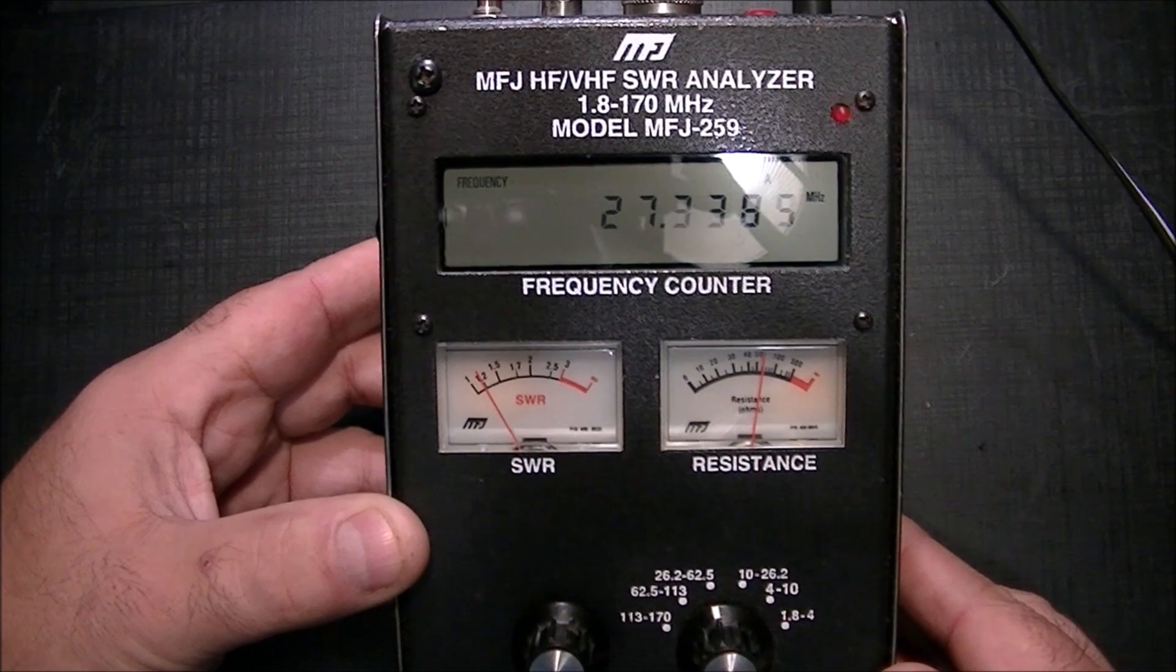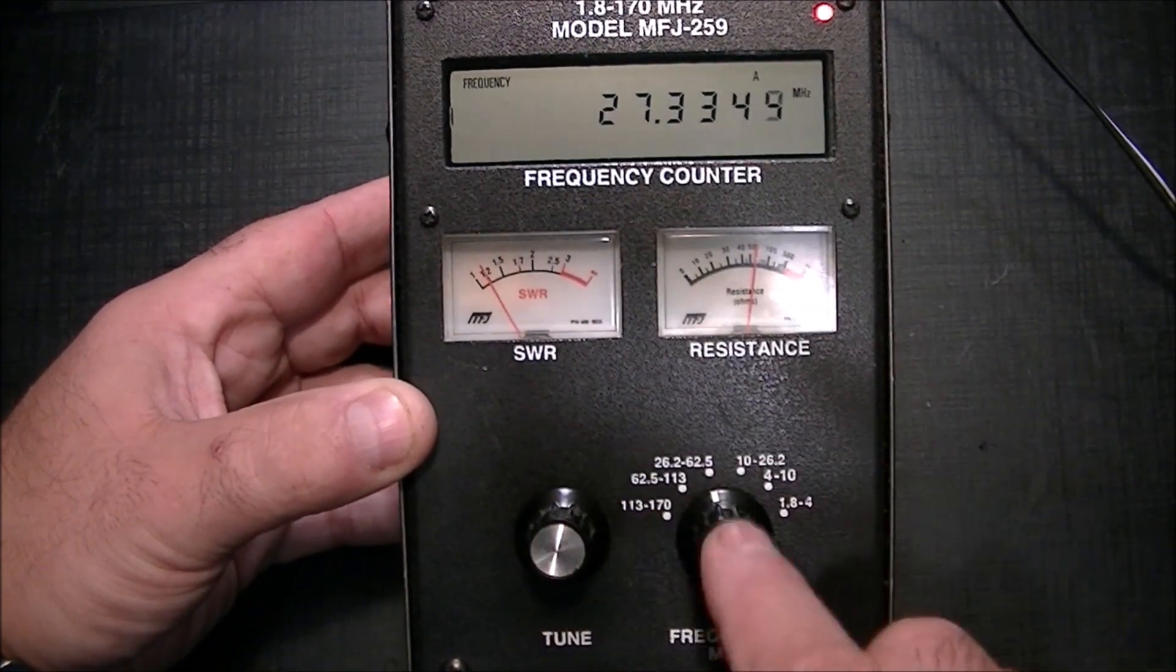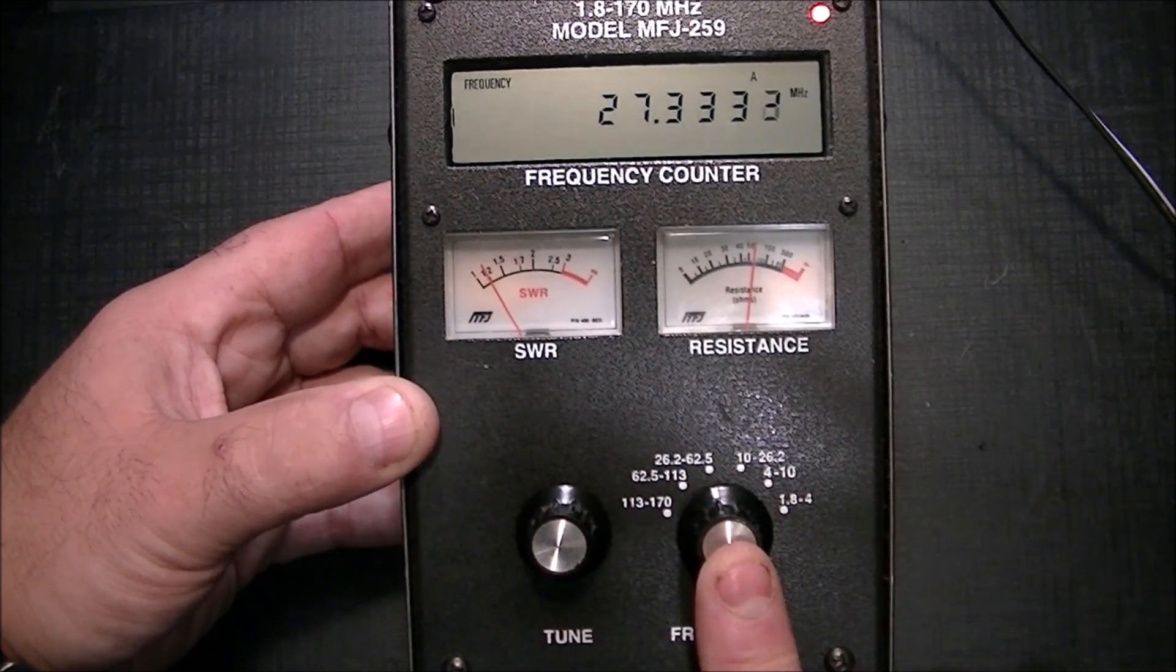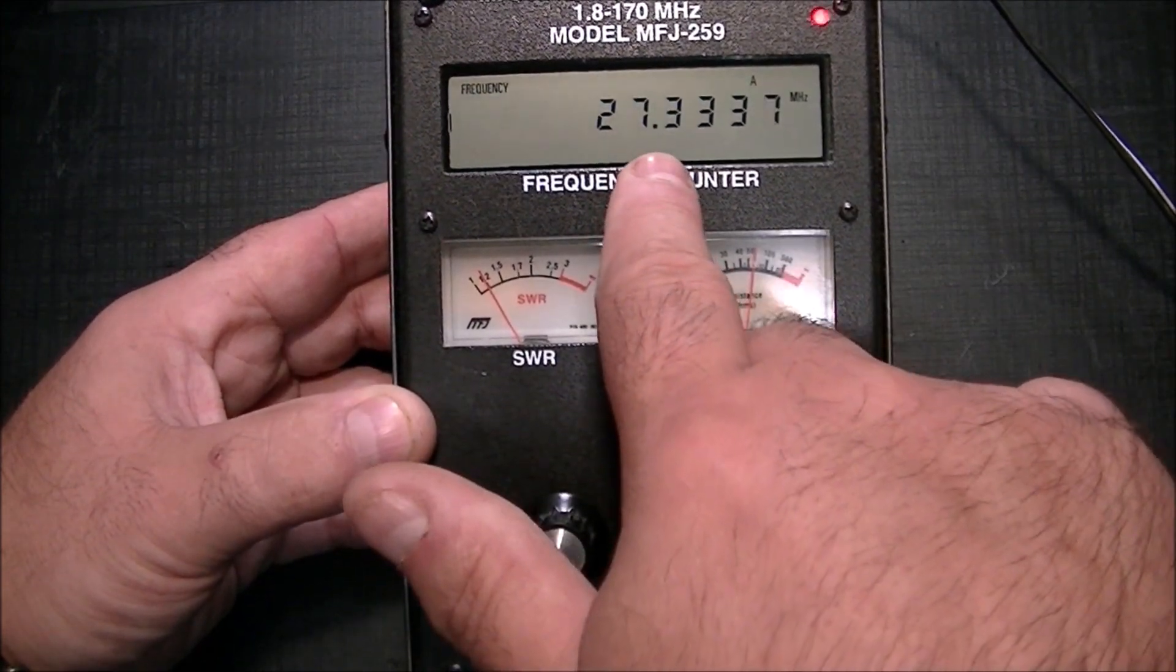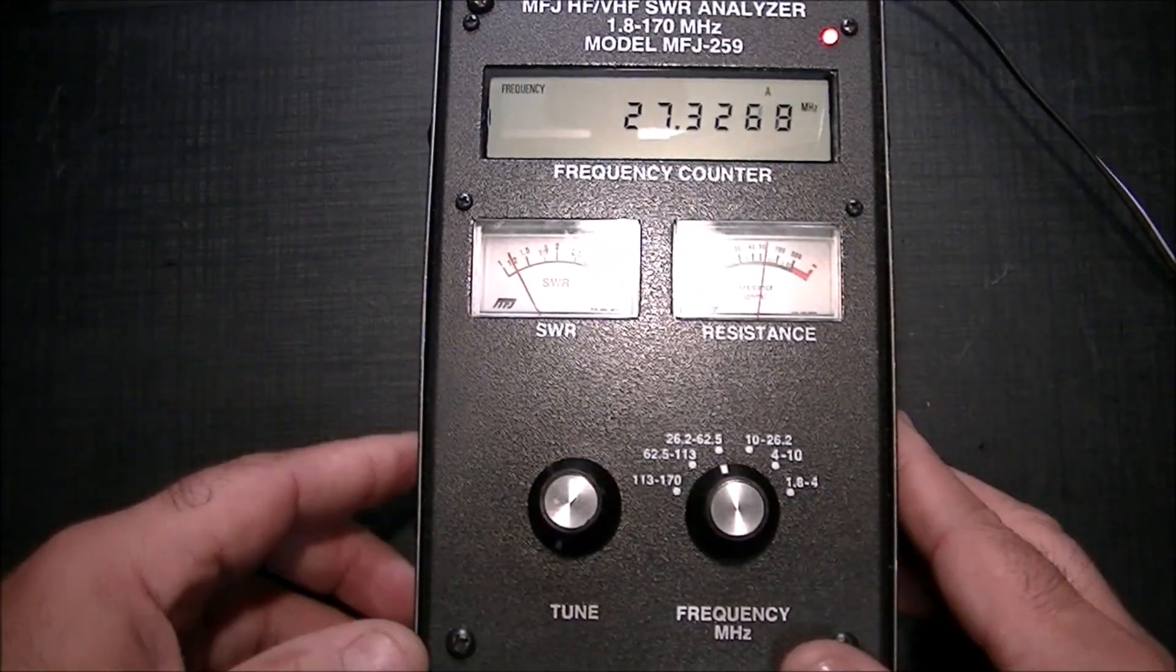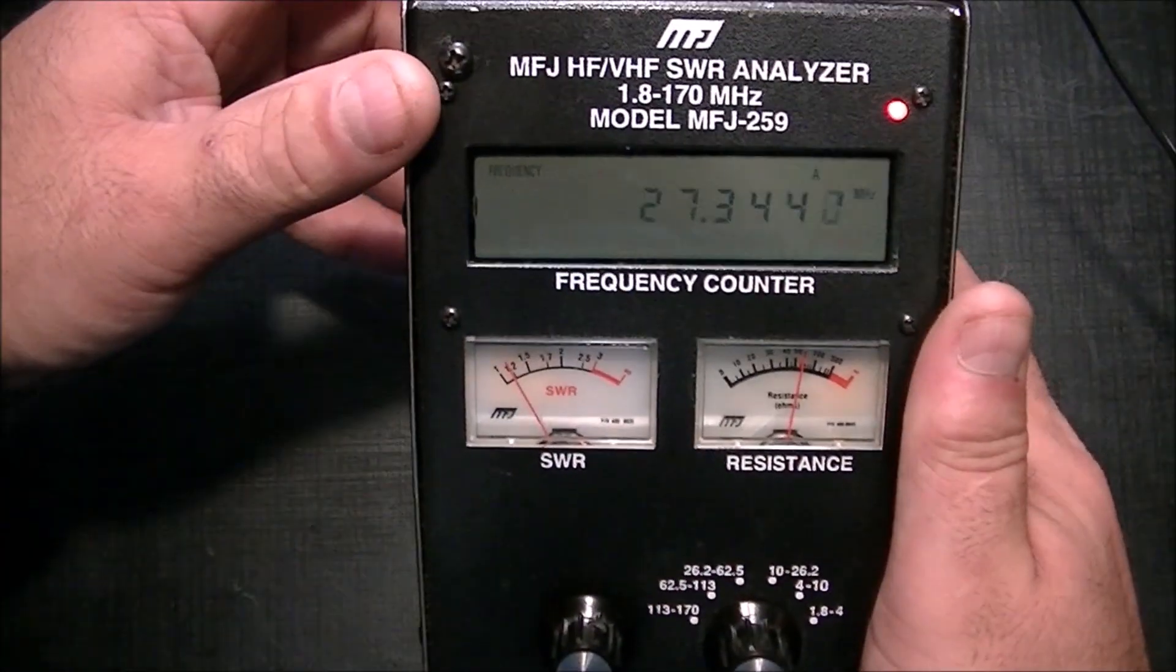This dial here is set, I have it dialed in on this band selection. I'm at pretty well channel 35 I guess on the CB band is where I would be. So it's telling me at this point where I have it dialed in.